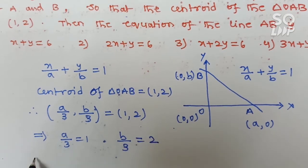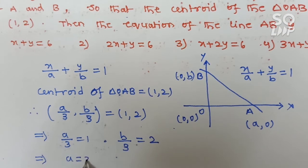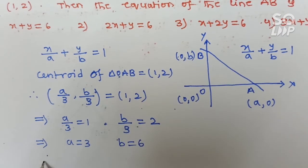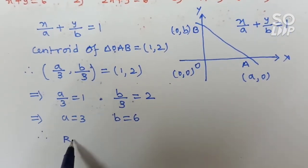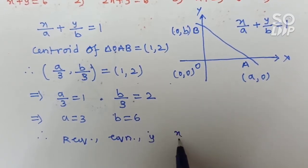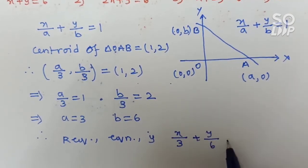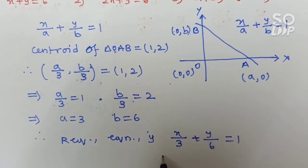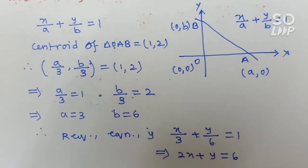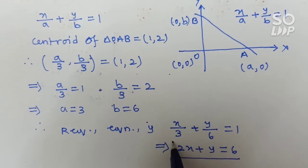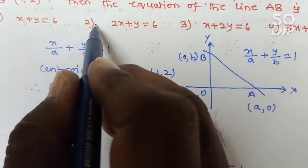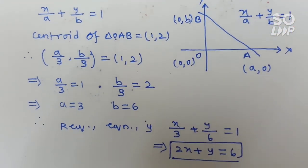Substitute a equals 3 and b equals 6 into the equation of AB: x/3 plus y/6 equals 1. Taking LCM of 6: 2x plus y equals 6. So your answer is 2x plus y equals 6. The second option is the correct answer.